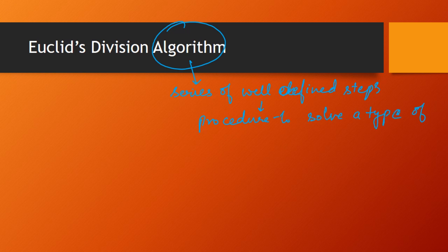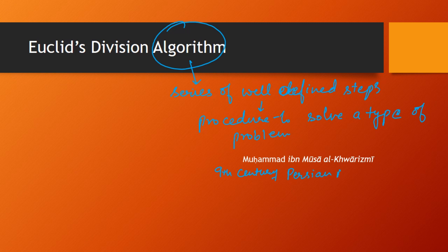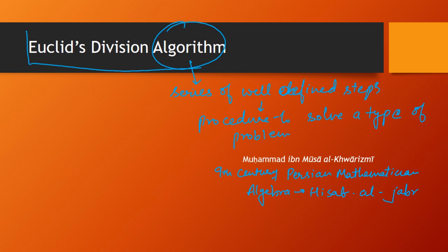This term was first coined by the 9th century Persian mathematician Muhammad ibn Musa al-Khwarizmi, who is also known as the father of modern algebra. The term algebra also comes from his famous book Hissaab al-Jabr, which was written by him in the 9th century. He is also the one who gave us the Hindu-Arabic numeral system.